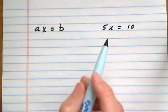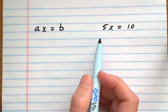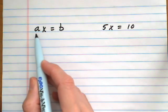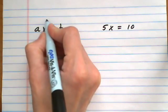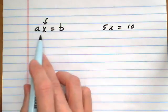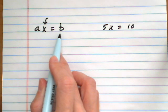We're going to solve some formulas for a specified variable. What I mean by that is we're going to have a formula like the one on the left, ax equals b, and we're going to solve for x. We don't have any numbers, just letters.